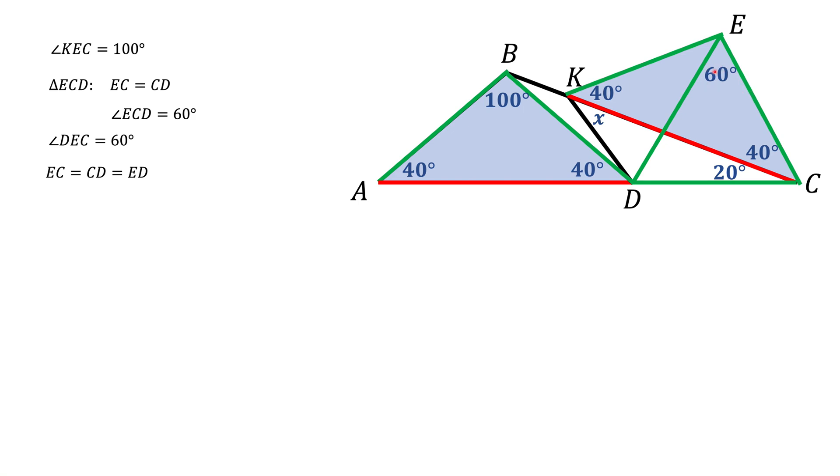But if this angle is 60 degrees right here, and this big angle E (angle KEC) is 100 degrees because it's the same as angle B, it means that this angle KED should be 40 degrees.